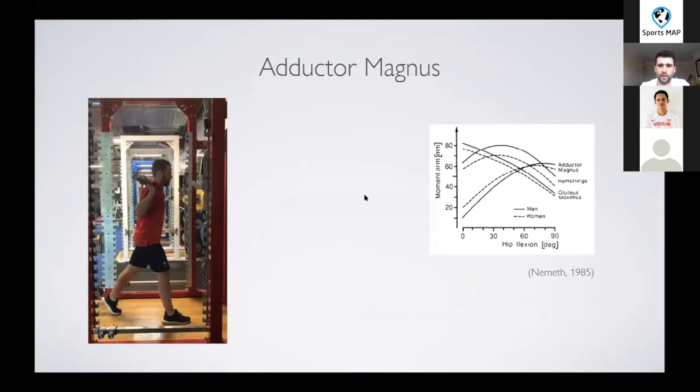So if we went to a five rep max with this guy, are we likely to accumulate sufficient magnus tension? It can accumulate fatigue, potentially not.